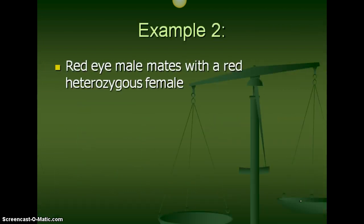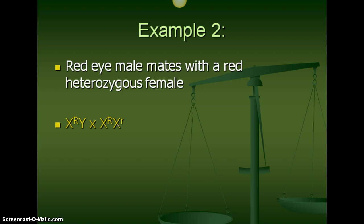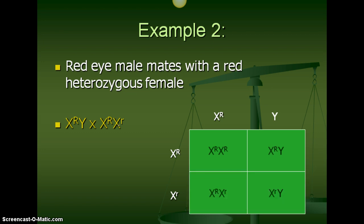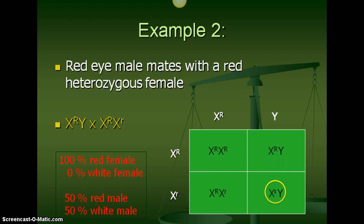Example 2: we have a red-eyed male that mates with a red heterozygous female. This is what that would look like in our cross — the red-eyed male crossed with a red-eyed female who is a carrier. They're heterozygous, so they're called a carrier of that trait. When we put that into the Punnett Square, our results show 100% red-eyed females, 0% white-eyed females. This one's a carrier, but still red-eyed. When we look at our males, we have half of them being red and half of them being white-eyed.